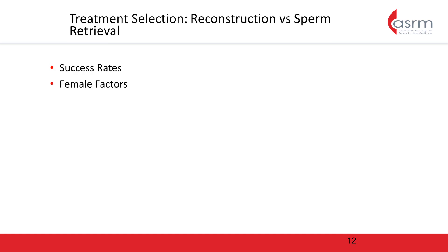Female factors are also an important part of treatment selection. For both microsurgical reconstruction and sperm retrieval with IVF ICSI, live birth rates drop steadily with increasing maternal age. Among couples that elect vasectomy reversal, female age has been found to be the most important predictor of success, with pregnancy rates being significantly worse when the female partner is over age 40. Additionally, the average time to pregnancy after successful vasectomy reversal is 12 months, which can be limiting for couples with an older female partner. Sperm retrieval with IVF ICSI may shorten the time to pregnancy and may therefore be a better option for couples with advanced maternal age or diminished ovarian reserve.